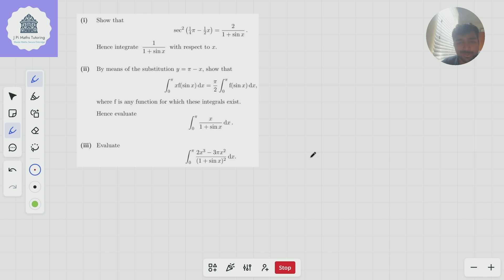And part three, the most interesting part, evaluate the integral from 0 to π of two x cubed minus three pi x squared, all over one plus sine x squared dx.